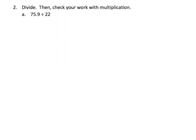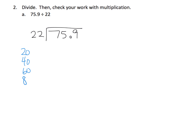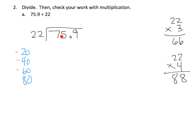Now we're going to do some standard division: ninety-five point nine divided by twenty-two. I'm going to estimate twenty-two as twenty and use skip counting: twenty, forty, sixty, eighty, etc. We think of this as seventy-five ones divided amongst twenty-two groups. I estimate three times. On scratch paper: twenty-two times three is sixty-six; twenty-two times four is eighty-eight, which is too much for seventy-five. So our quotient digit is three.